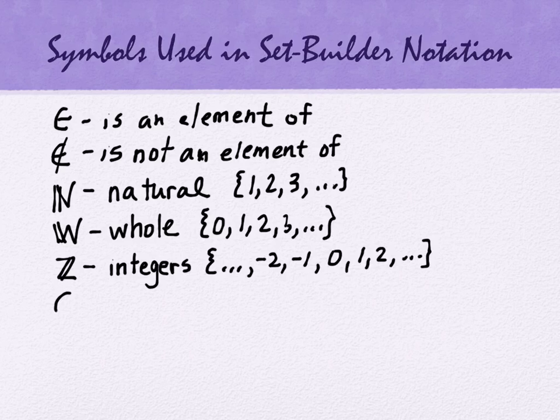The next set of numbers that we include start to talk about fractions. The reason we use Z for integers, by the way, instead of, say, I, is because I is usually used for irrational. It's used for something else. The Z comes from the Latin word for integers. So that's where it's coming from.